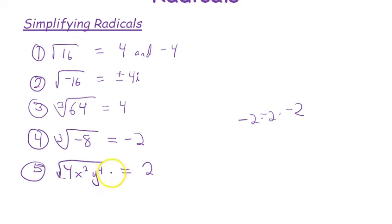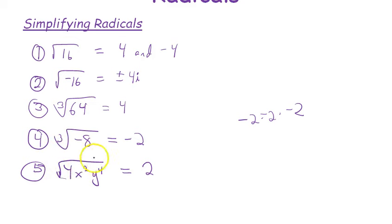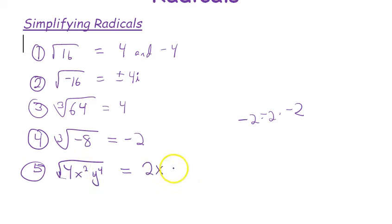Changing the problem slightly to the square root of 4x²y⁴: you divide the exponents by 2 because a square root is the same as a one-half power. So x² divided by 2 gives x¹, and y⁴ divided by 2 gives y². The answer is 2xy².